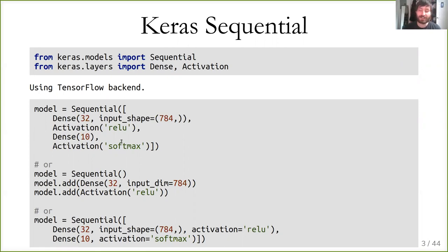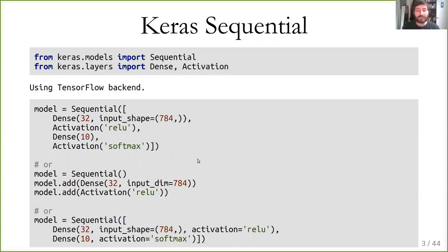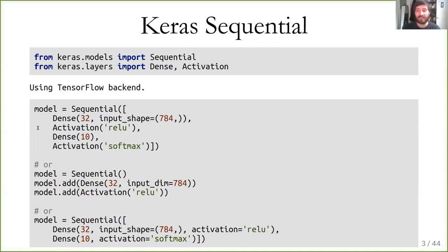For the first layer, we need to specify the input shape so the network can allocate the right size of matrices. For all subsequent layers, the network can automatically determine the input size from the previous layer. So the first dense layer will be a matrix of 784 times 32, and the second one will be 32 times 10. We can also specify the model by starting with an empty sequential model and then adding layers one by one — starting with an empty model, adding a dense layer, then an activation layer, and continuing.